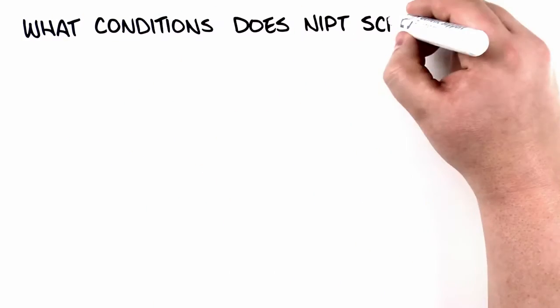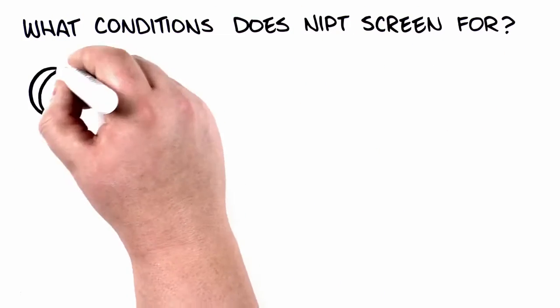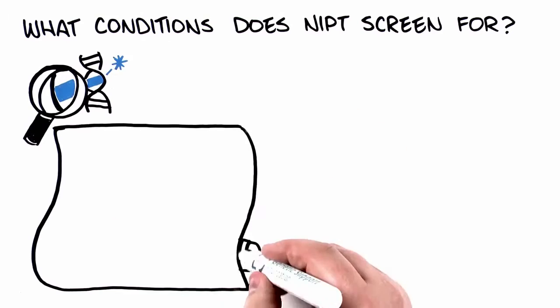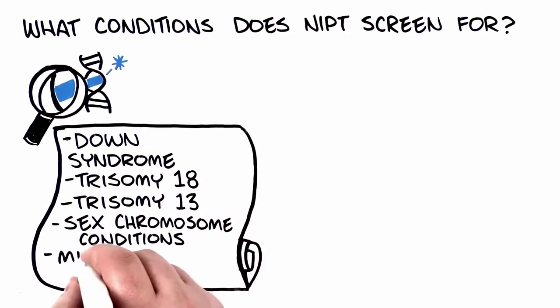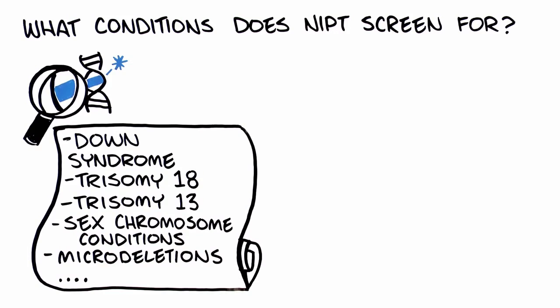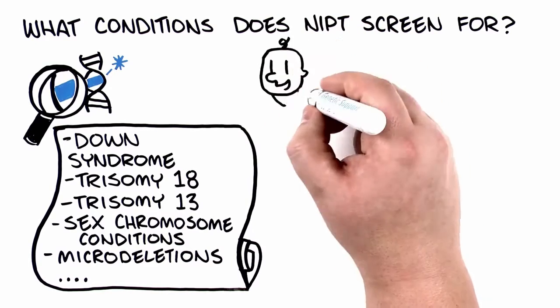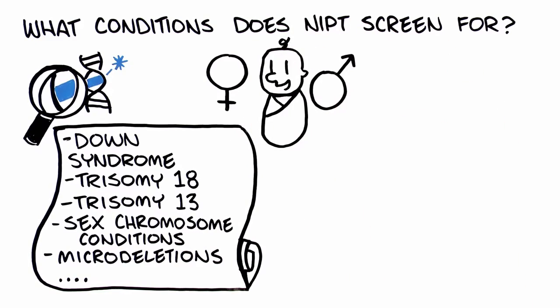What conditions does NIPT screen for? Though this testing began as a screening for Down syndrome, over time, the list of conditions being screened has grown, and the effects of the screened conditions vary tremendously, from very mild to severe. In some cases, NIPT can also predict the gender of the baby.